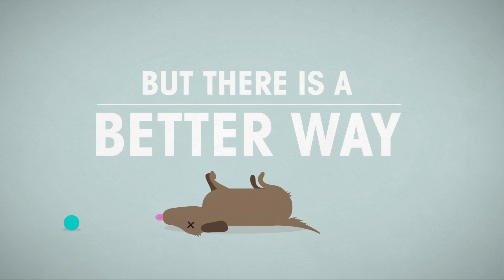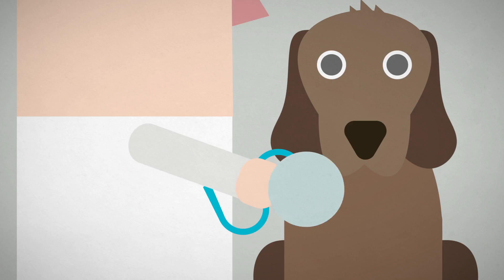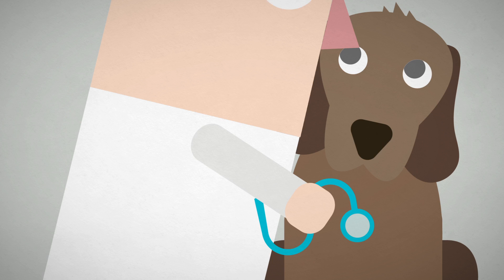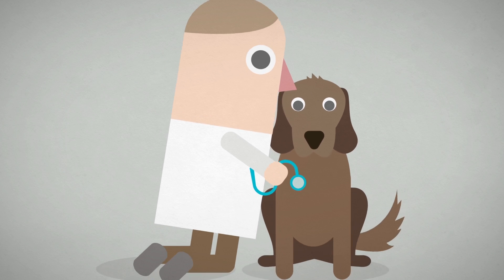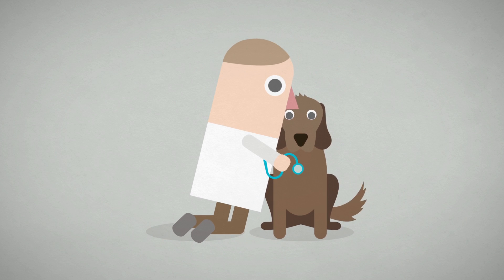But there is a better way. Vaccinating dogs against rabies reduces rates of the disease in people, meaning the dogs and people of India can live safely together.